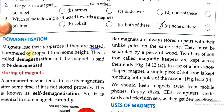A magnet should not be kept warm, hammered, hit, dropped, or mishandled. This is called demagnetization and the magnet is said to be demagnetized. This process is called demagnetization, and when it is done the magnet loses its magnetic properties.